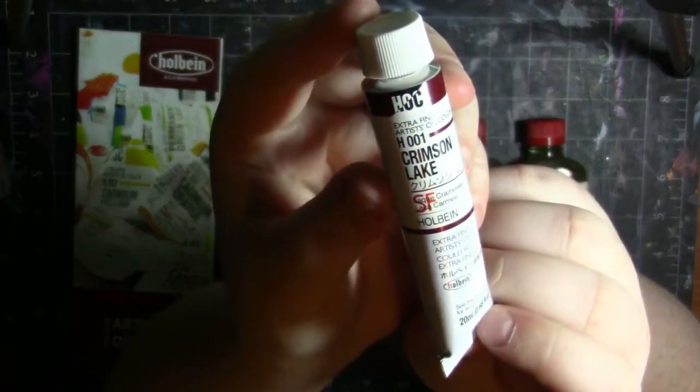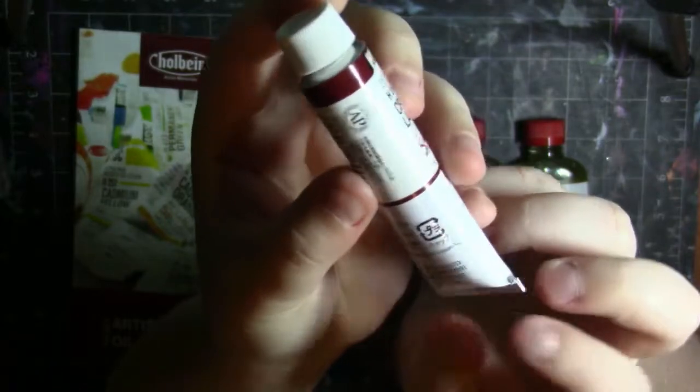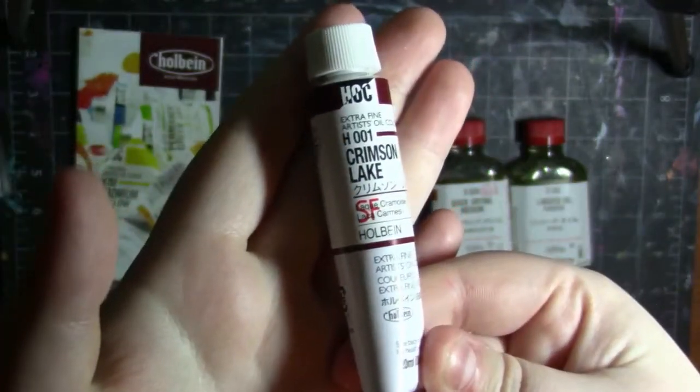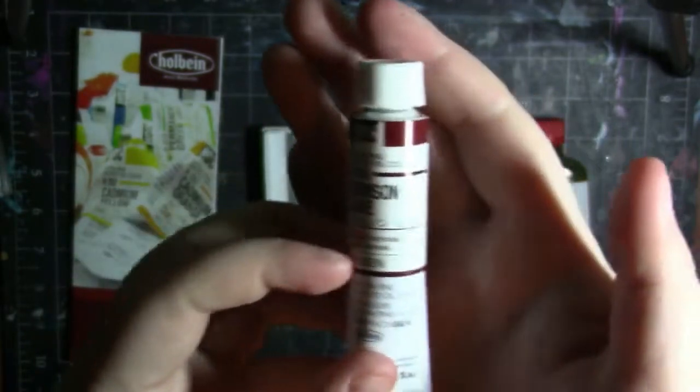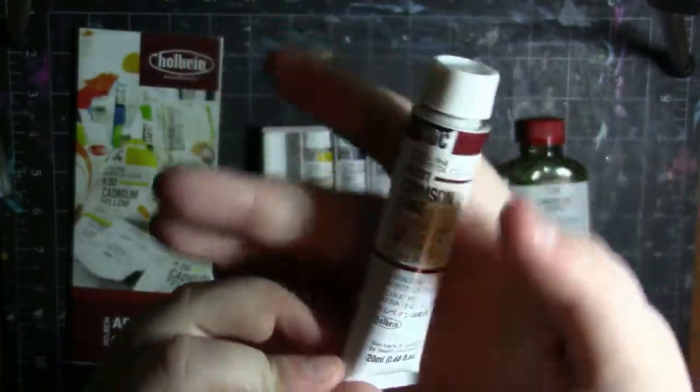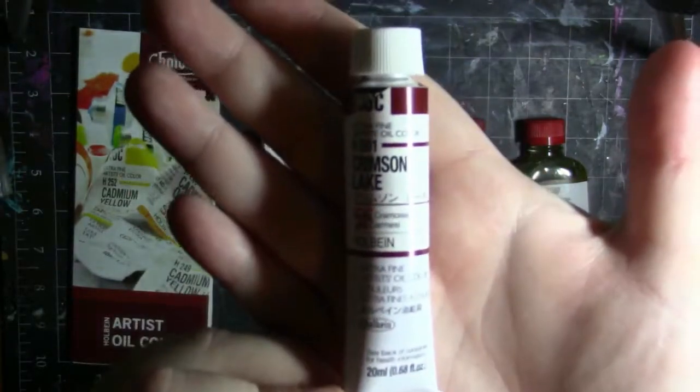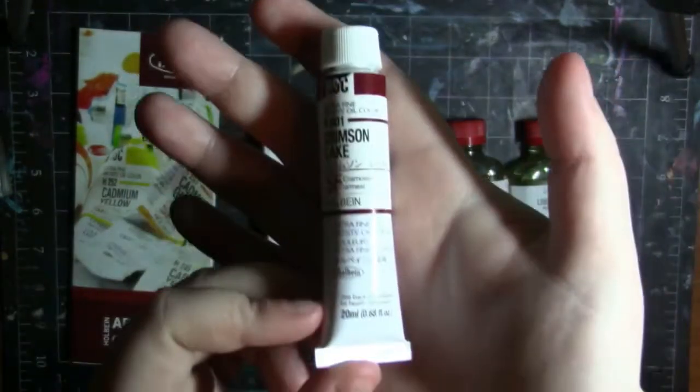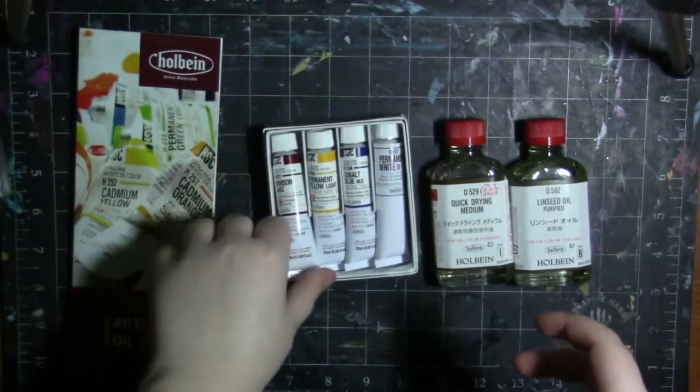So this is what it looks like. It has the letters SF over here and I'm pretty sure that they mean super fine. I could be wrong about that. And it is 20 milliliters. Basically everything else is in Japanese, so that's what I'll be using the brochure for so I can get some more info on these.